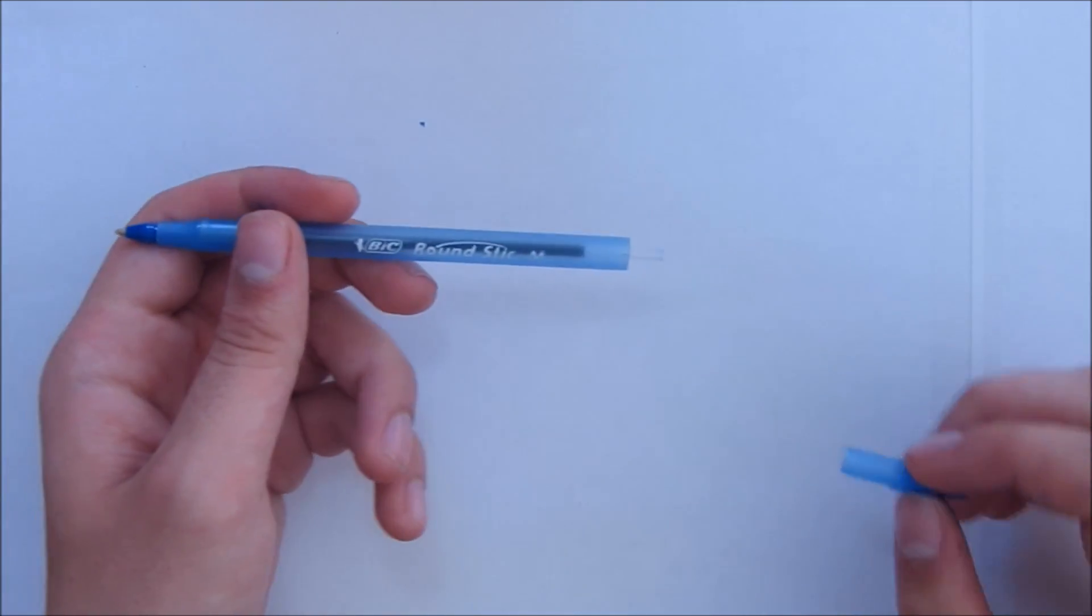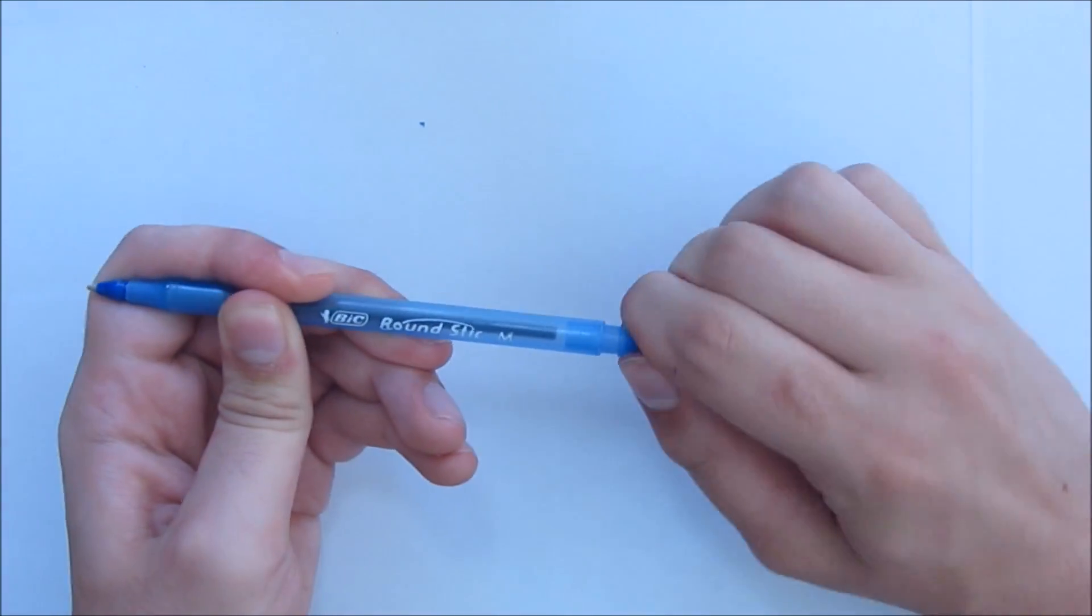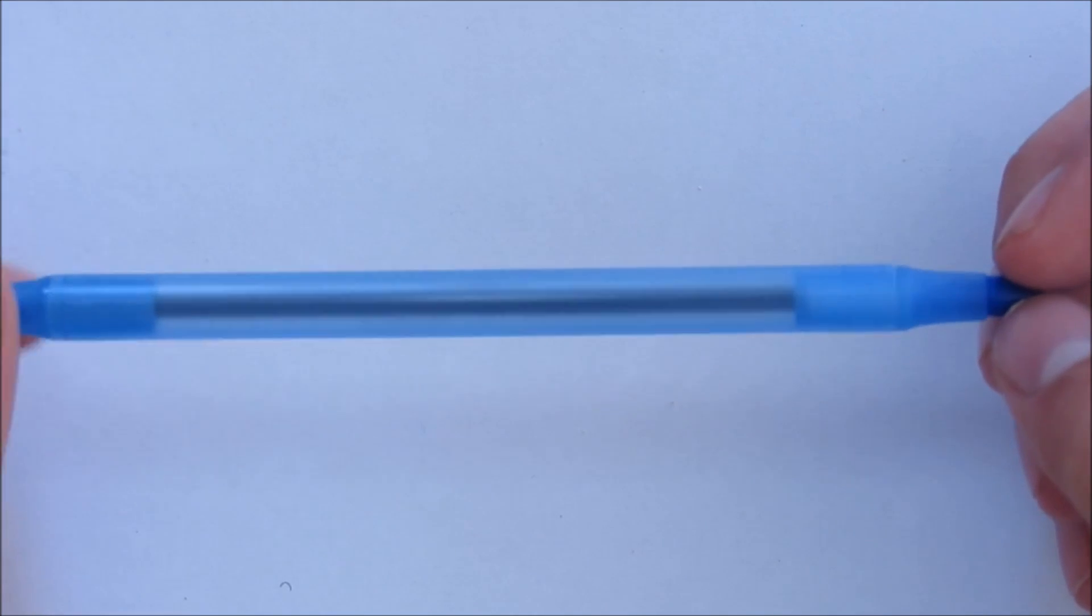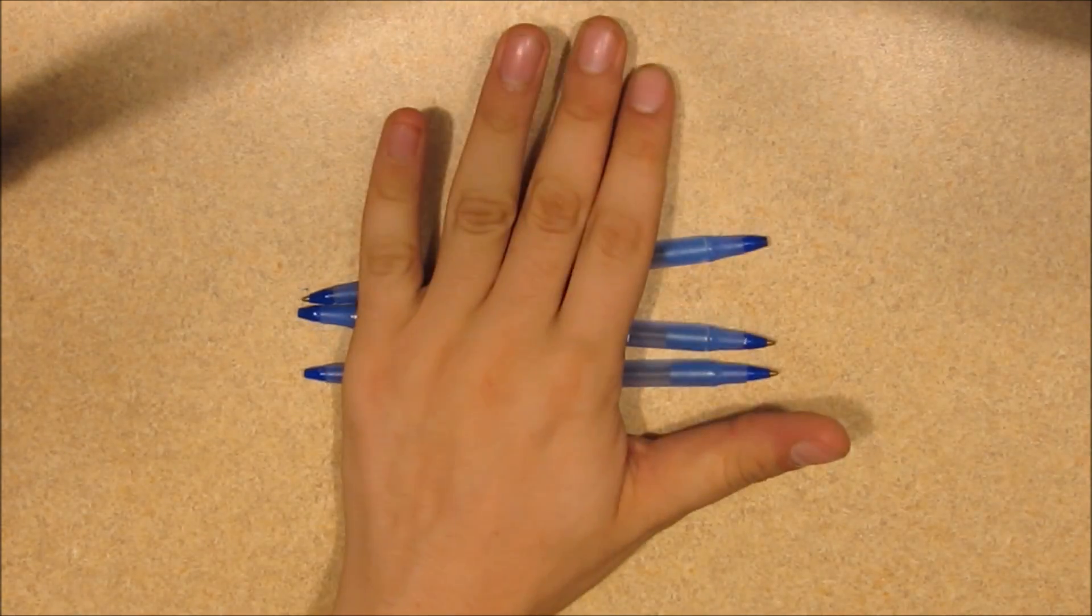Cap the back of the first pen with the empty head of the second. This will center the inkwell between the two ends. To make sure the well is centered, roll the pen between your fingers. As the pen rotates, the inkwell should not appear to move. Make 2 more for a total of 3 molds.